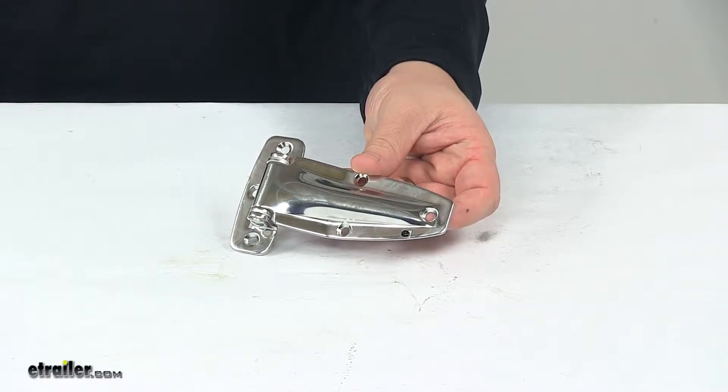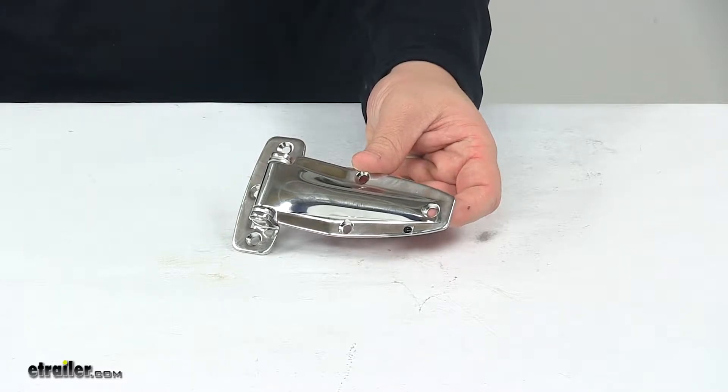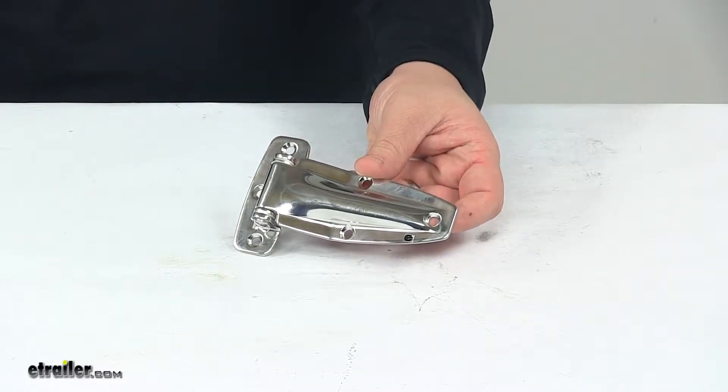Today we're taking a look at a Polar flush hinge. This hinge is for use on cabinets, service vehicles, and utility trucks.